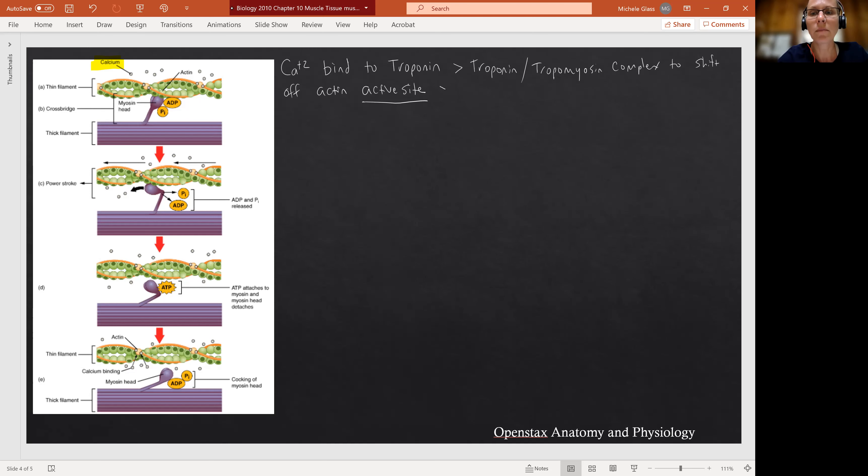And as soon as the active site is available, the myosin head is going to grab. And this is a very active process. I think it's totally fine to think of it as grab and hold. It's going to grab the actin. And we call this the cross bridge formation.